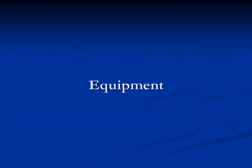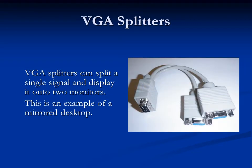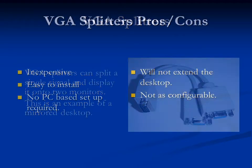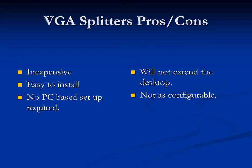Now let's talk about the various types of equipment used. VGA splitters can split a single signal and display it onto two monitors — this is an example of a mirrored desktop. VGA splitters have various pros and cons. Some pros are that they're inexpensive and easy to install with no PC-based setup required. The cons are that it will not extend the desktop and it's not as configurable.